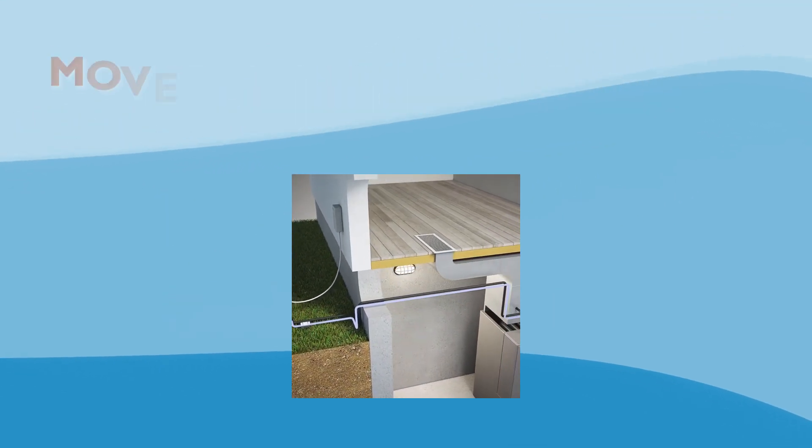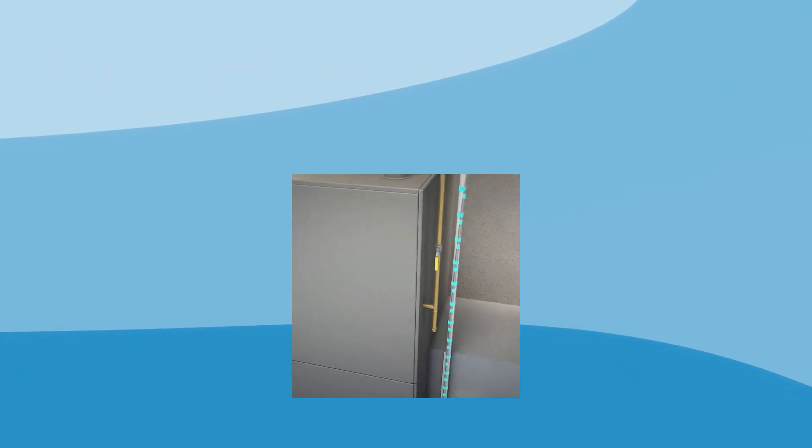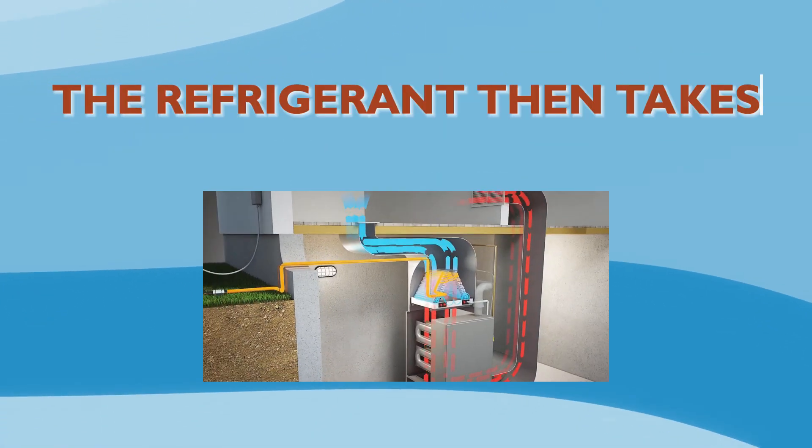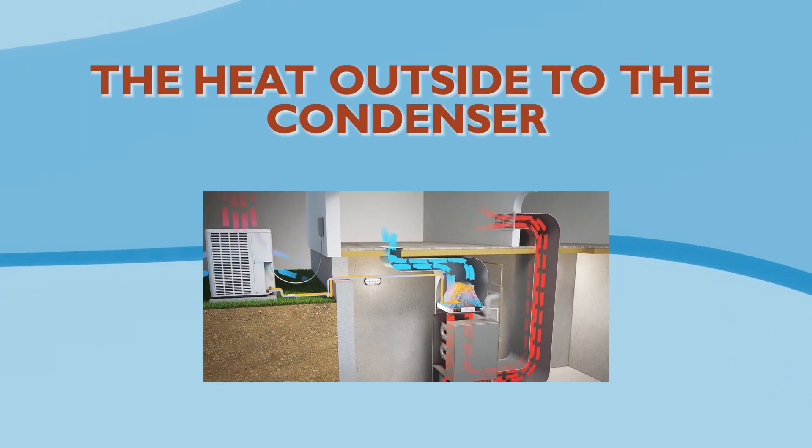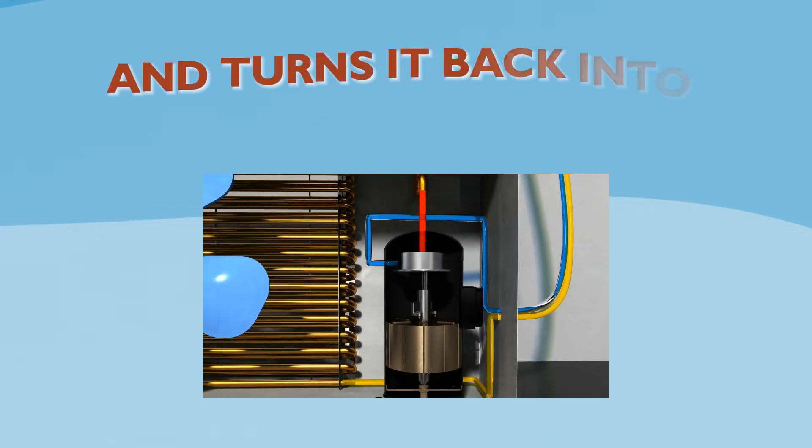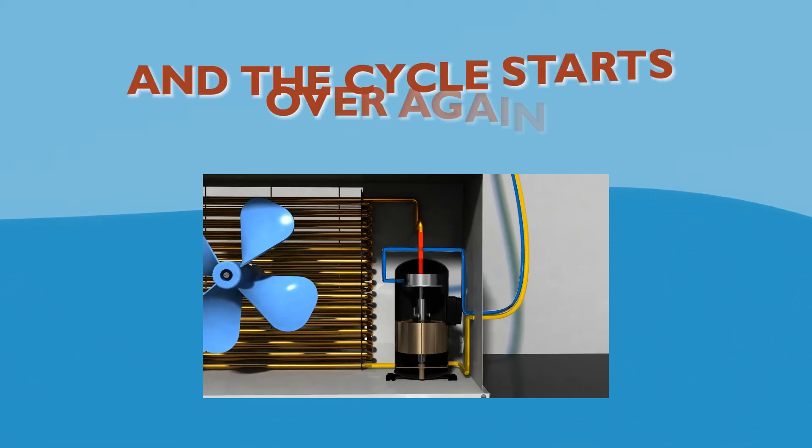The liquid refrigerant moves through the lines in your home, where it changes into a gaseous state as it absorbs heat from the air in your house. The refrigerant then takes the heat outside to the condenser, where the compressor compresses the gas under high pressure and turns it back into a liquid, and the cycle starts over again.